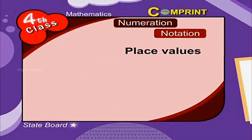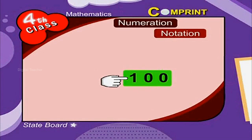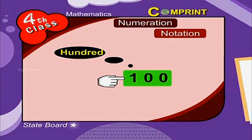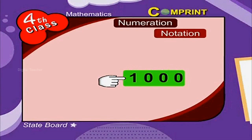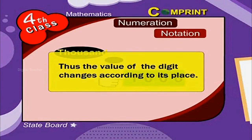Now let us recall the place values once again. The place value of 1 in 100 is 100. The place value of 1 in 1000 is 1000. Thus, the value of the digit changes according to its place.